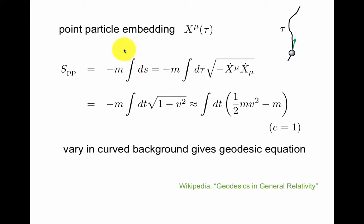What is really nice about this, if you vary this original action that is very compact in a curved background, you get the geodesic equation of general relativity. This is nicely reviewed on this Wikipedia page as a reminder. This is a powerful way to talk about actions of a point particle moving in a possibly non-trivial background.